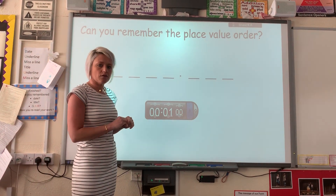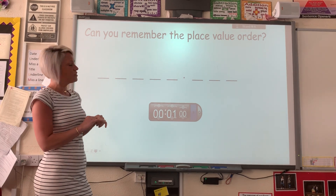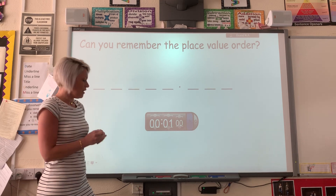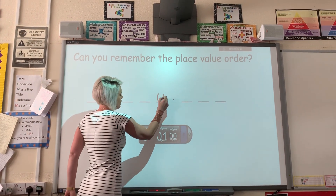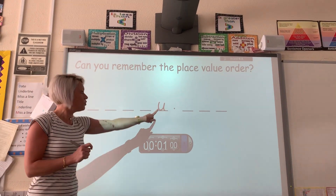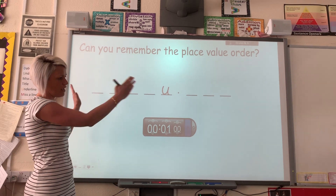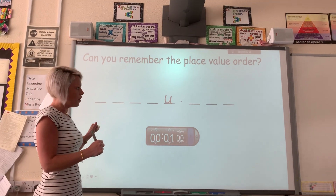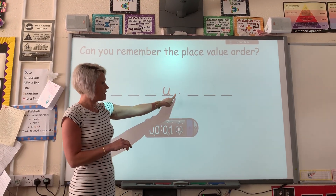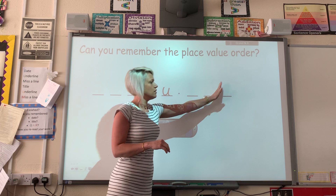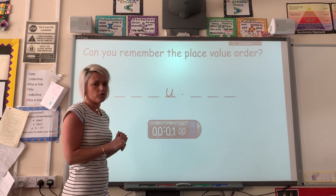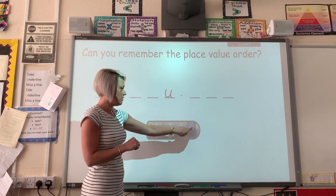So the first thing we want you to do is get yourself a piece of paper and a pen, and I want you to see if you can remember the place value order. I'll start you off with a clue: if I put units on that line, you don't need to go all the way up to millions — just go as far as I've done the lines. That's the kind of number area I'm working in over the next few days. I'm going to give you a minute now to do that. You've got your decimal point — three to the right of the decimal point and five to the left.